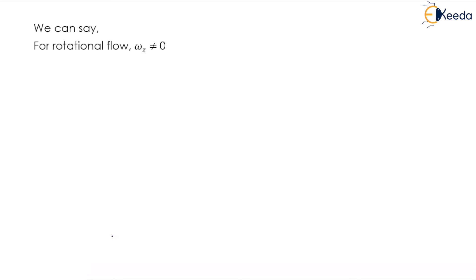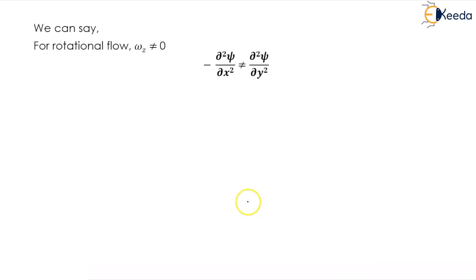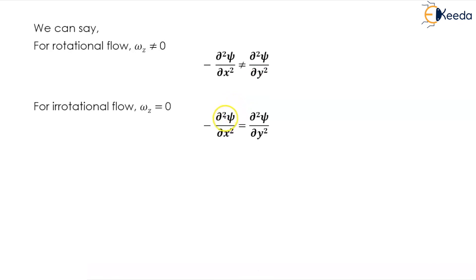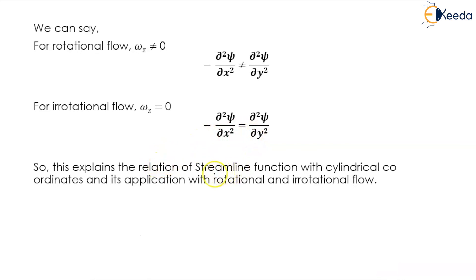For rotational flow, ω_z ≠ 0; hence −∂²ψ/∂x² = ∂²ψ/∂y². For irrotational flow, ω_z = 0, so ∂²ψ/∂x² = −∂²ψ/∂y². This explains the relation of streamline function with cylindrical coordinates and its application with rotational and irrotational flow.